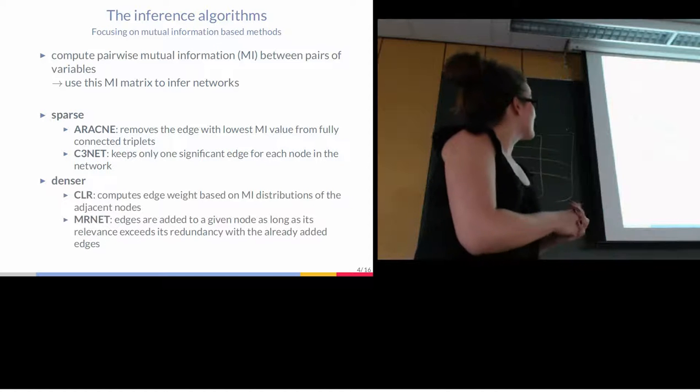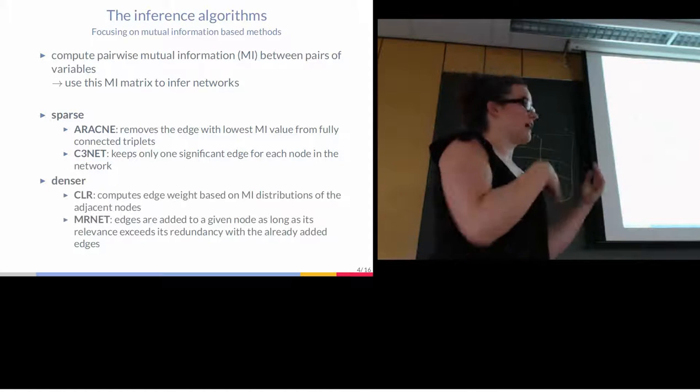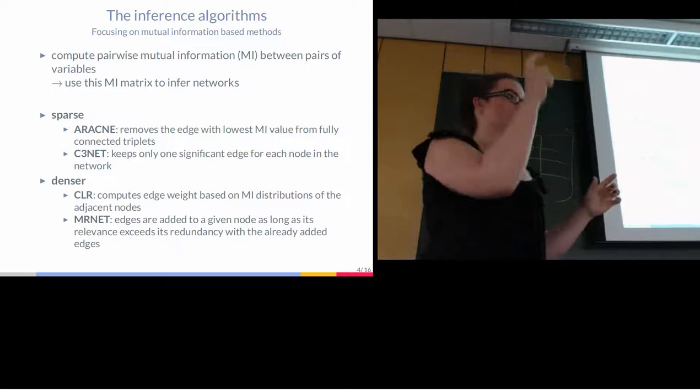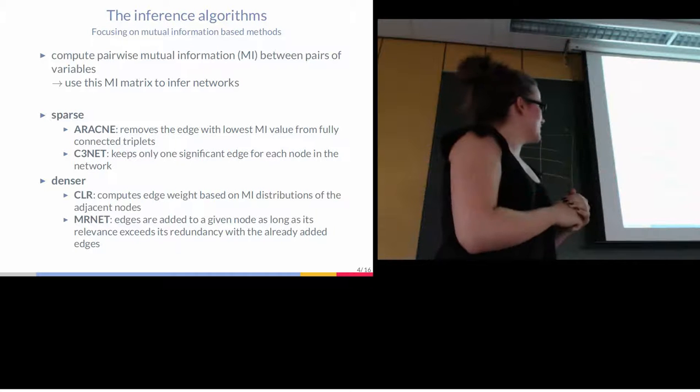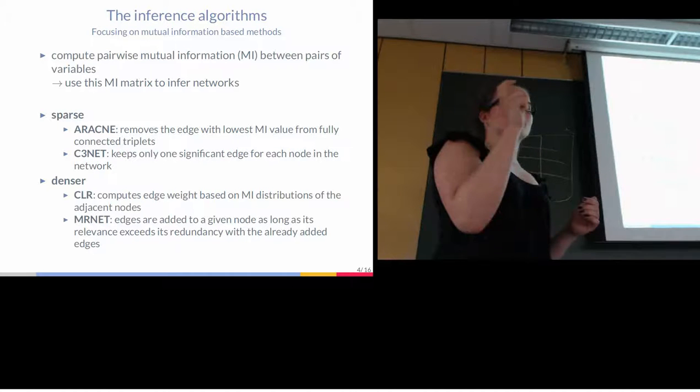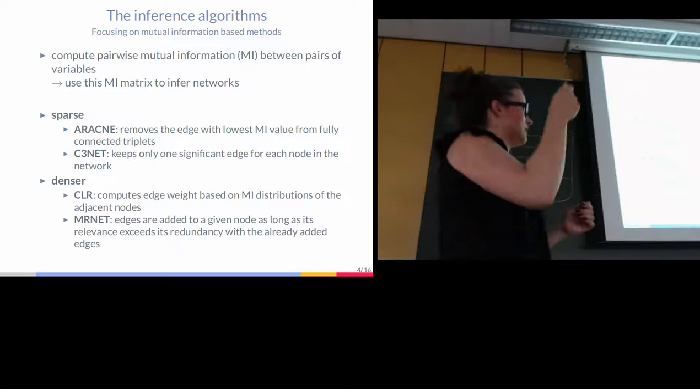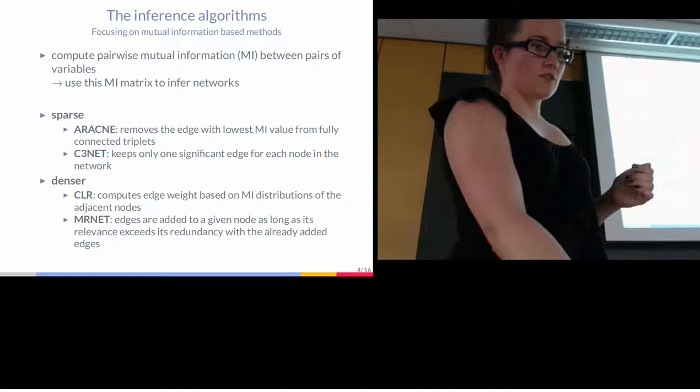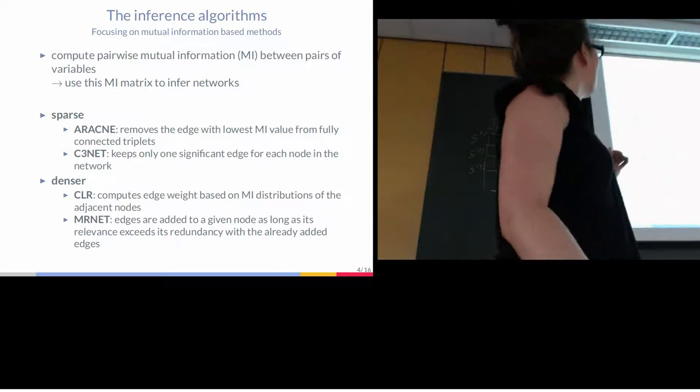And then you have the methods that infer denser networks. CLR, Patrick already explained in detail what it does. It takes the distribution of the two variables into account to assign a weight to each edge. And then MRNET, you basically infer the weight by computing the relevance minus the redundancy with the already inferred edges of that variable. So these four methods you will find in all my results slides.